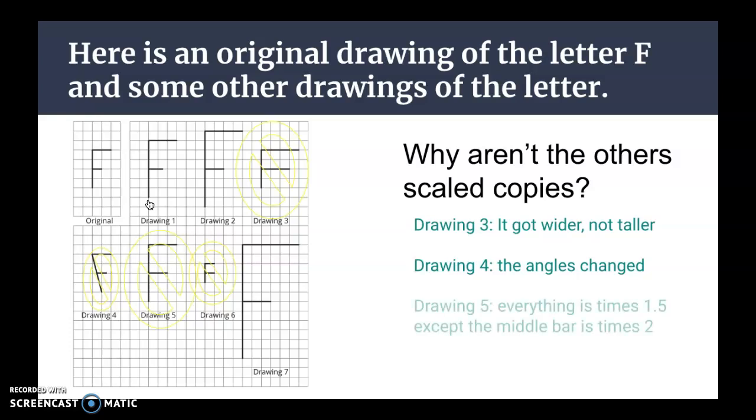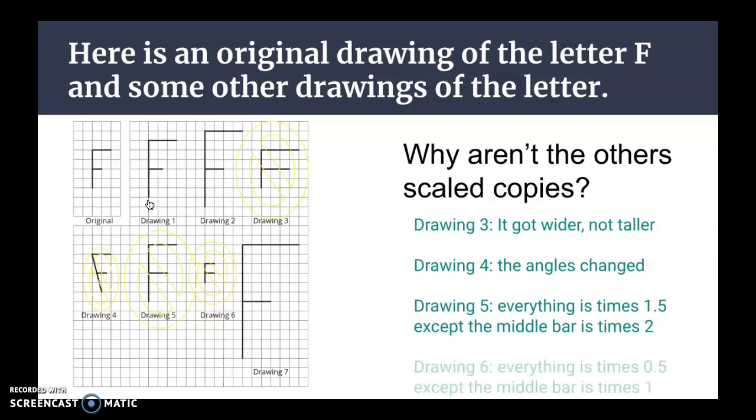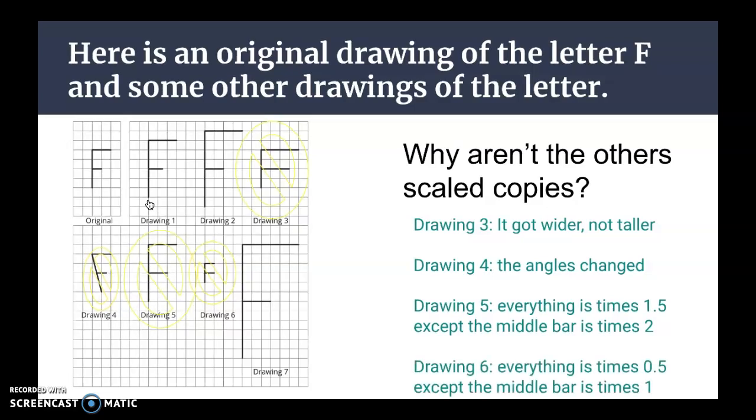Drawing 5, in my opinion, that was the trickiest. Every single part of it is multiplied by 1.5, except the middle bar is multiplied by 2. So it's very subtly not similar. In drawing 6, kind of the same, everything is times 0.5. It's half as big as the original, except that middle bar is times 1. It's the same size.